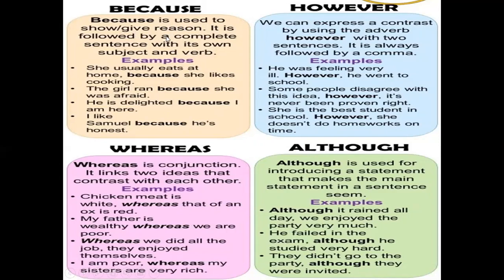'Because' is used to show or give reason and is followed by a complete sentence with subject and verb: 'The girl ran because she was afraid.' 'However' is used to express contrast using an adverb with two sentences and is always followed by a comma: 'He was feeling very ill. However, he went to school.' 'Whereas' links two contrasting ideas: 'My father is wealthy whereas we are poor.' 'Although' introduces a contrasting statement: 'Although it rained all day, we enjoyed the party very much.'